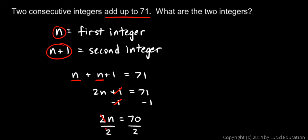Now I can divide each side by 2. The 2's cancel out on the left, leaving me with n all by itself. n equals 70 over 2, and 70 divided by 2 is 35.